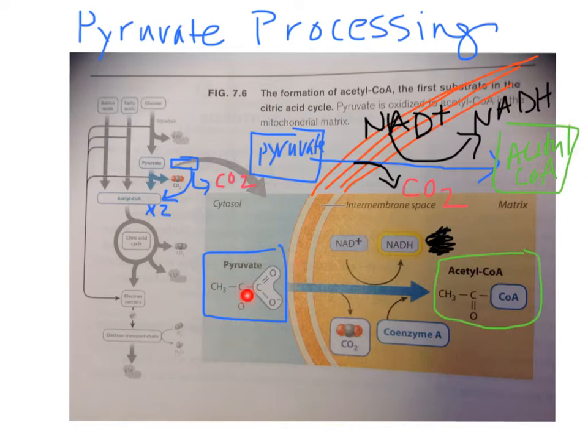The other pyruvate goes across the membrane. NAD becomes NADH, we lose a CO2, add a coenzyme, and we get acetyl CoA.